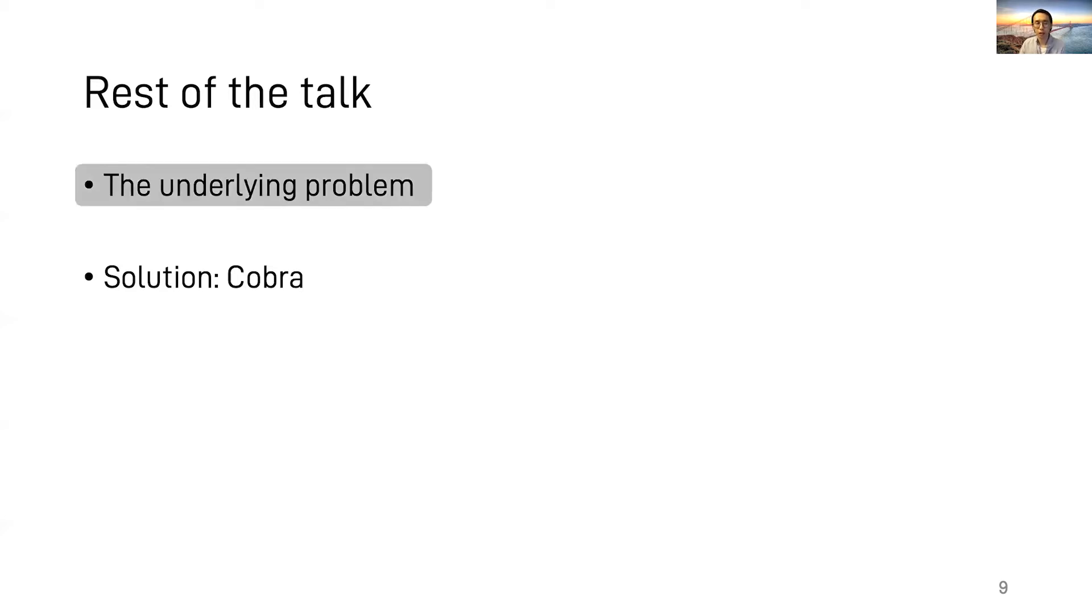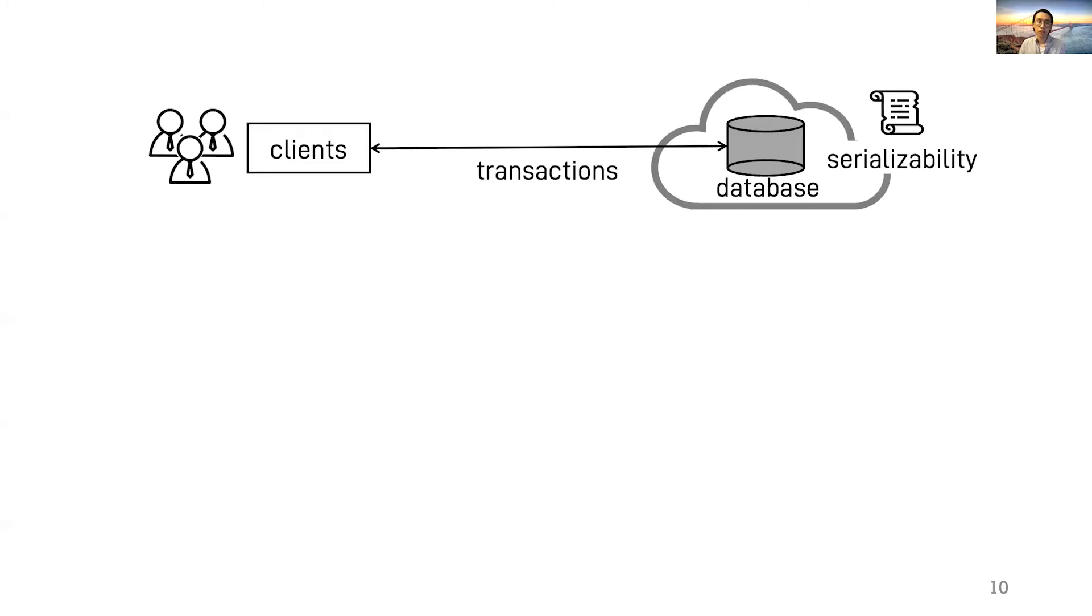Now onto the first topic. Recall Dana's case. The company's application as clients sends transactions to a cloud database, which claims to be serializable. By transactions, I mean a set of read-write operations, which happen all together or none of them happen.